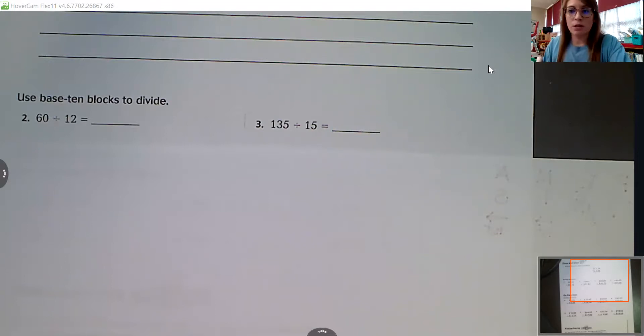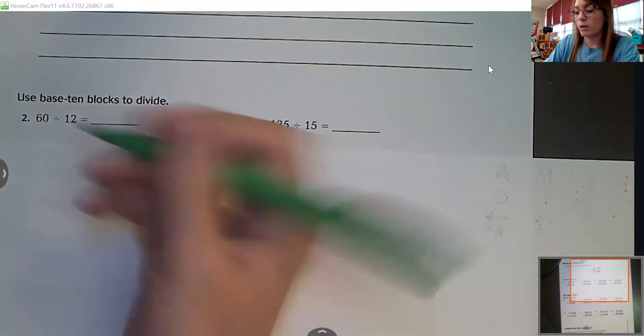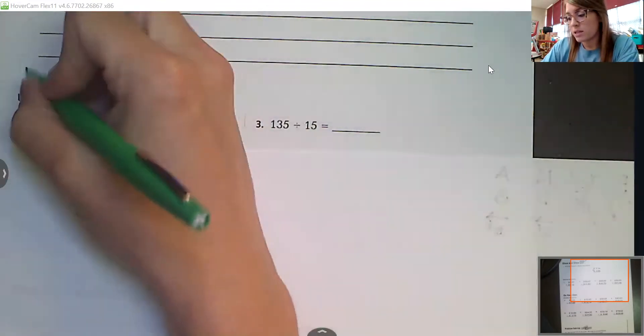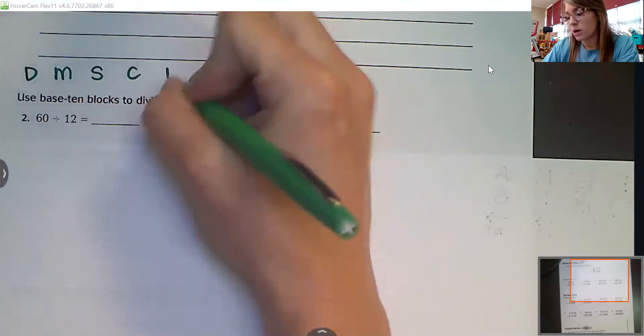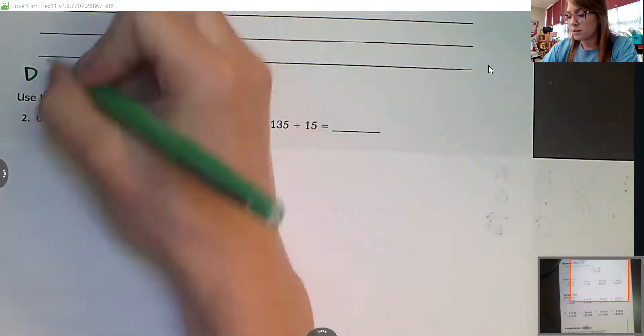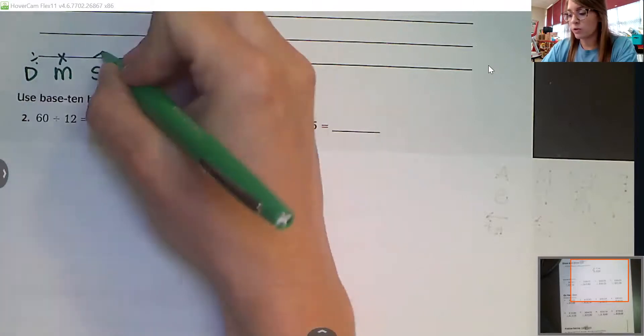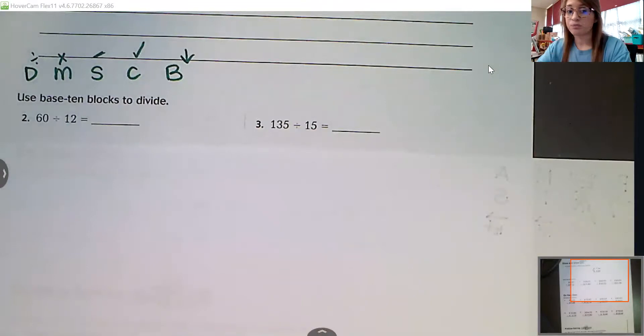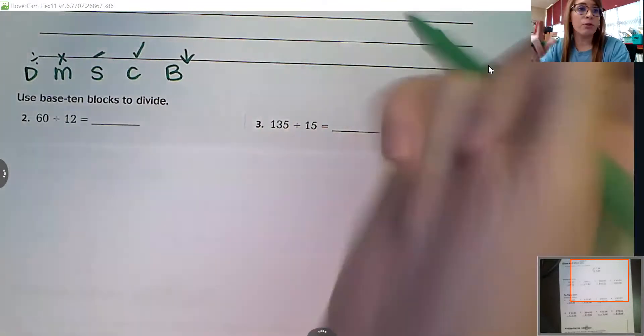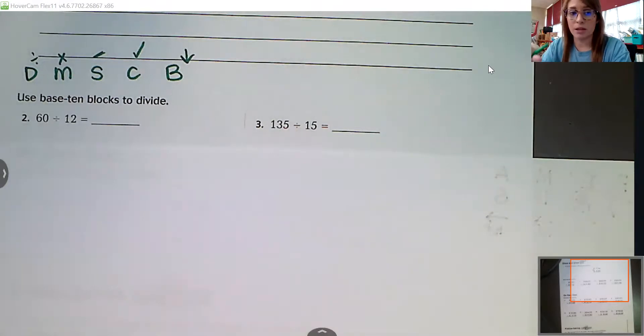First thing I want to do is go over our steps to division. Remember, we've got does McDonald's sell cheeseburgers. Divide, multiply, subtract, check, and then bring down. Same steps can be used whether there's two digits in front, four digits, same process can be used.